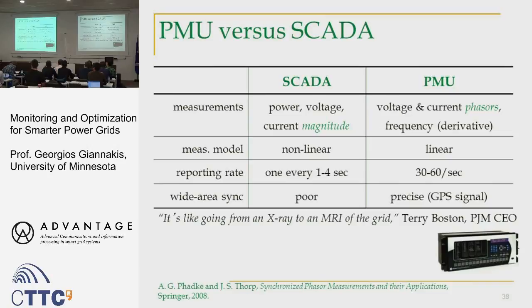PMUs, on the other hand, promise to measure not only amplitude but also phase — and therefore the entire phasors. By taking the derivative of the phase you can find the frequency. Although conventional meters give rise to quadratic equations, PMUs, because they go with Ohm's law rather than power, give rise to linear equations. They report 30 to 60 measurements per second, and synchronization is very precise because they use GPS synchronization.